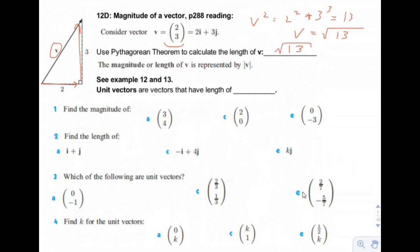We could write the length of vector v as the absolute value of bold v. Unit vectors are vectors that have a length of 1.